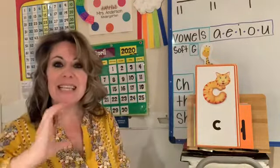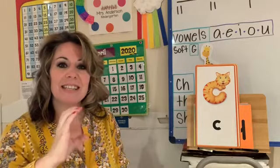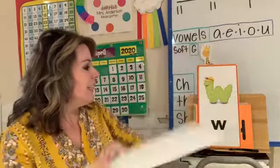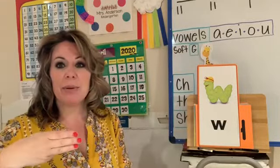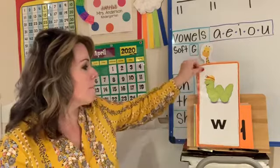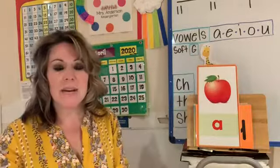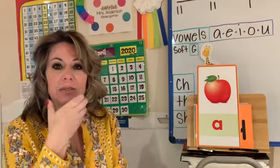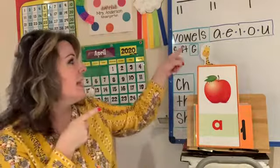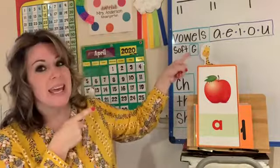The letter is C and the sound is kuh, kuh, kuh. The letter is W and the sound is wuh, wuh, wuh. The letter is A and the sound is ah, ah, ah, or A. Good job. The letter is L and the sound is oo, oo, oo.